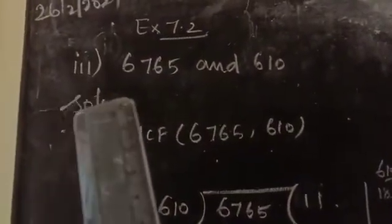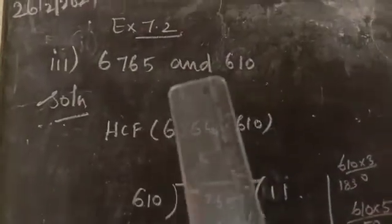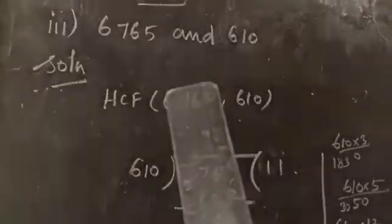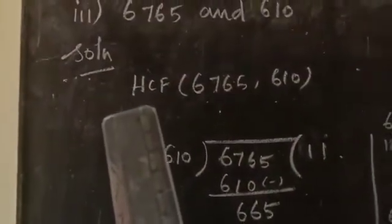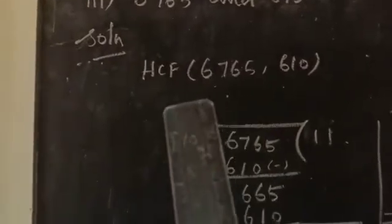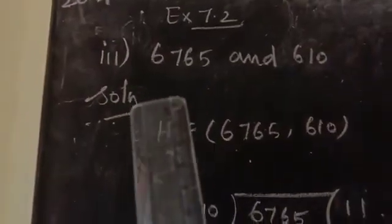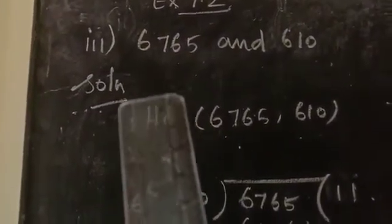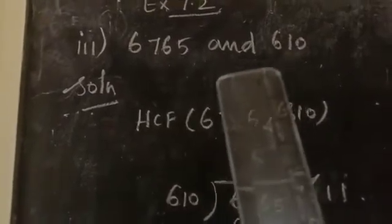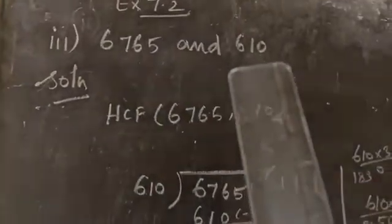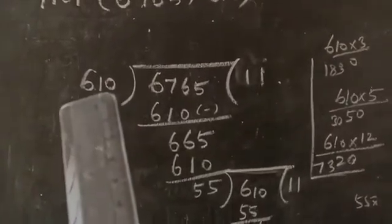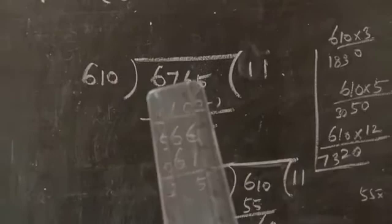Third sub-question sum is 6765 and 610. So first, we have to find the large value and small value. Here, the large number is 6765. So we consider the dividend in this sum. 610 is the smallest number. So that number 610 is considered to be divisor. So in first division, 610 is a divisor and 6765 is a dividend.